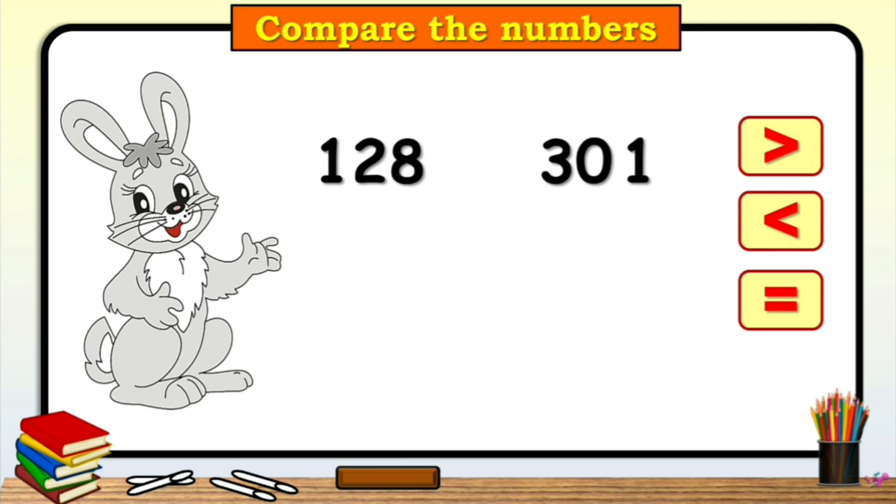128 and 301. Now, children, here in the hundreds place, 1 is less than 3. So, the answer is 128 is less than 301.